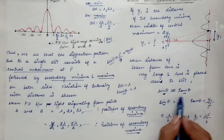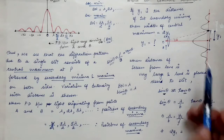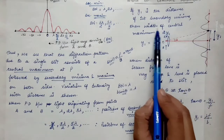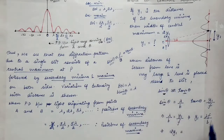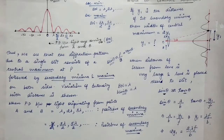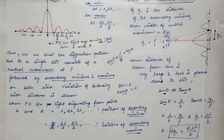Using sin theta = tan theta: sin theta equals lambda by b and tan theta equals y1 divided by f. From this expression, y1 equals lambda times f divided by b. The width of central maximum equals twice of y1, so multiplying by 2 gives width = 2·lambda·f divided by b. This is the width of the central maximum.